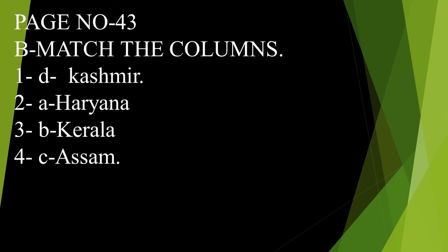Section B — match the columns. First will match with D, Kashmir. Second will match with A, Haryana. Third will match with B, Kerala. And the fourth one will match with C. Awesome, okay.